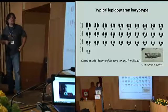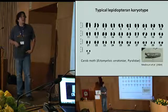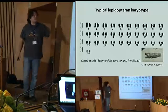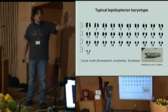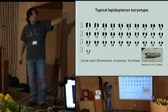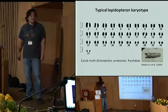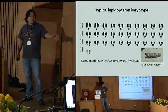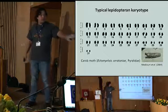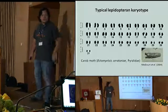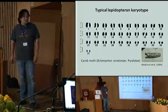First I should give you some brief introduction into Lepidopteran cytogenetics. Here you can see a quite typical Lepidopteran karyotype. The chromosomes are relatively small and uniform in both shape and size — you cannot identify individual chromosomes — and most frequently the haploid chromosome number is 31, and it's also thought that this number is ancestral.